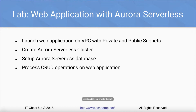Create an additional private subnet. Create two VPC security groups, one for web server public access and the other one for database private access. Create a DB subnet group. Instead of creating a DB instance, we create an Aurora cluster with Aurora Serverless option.